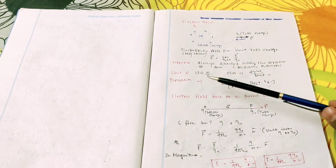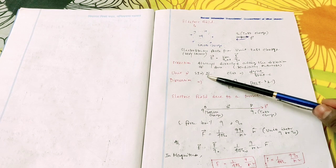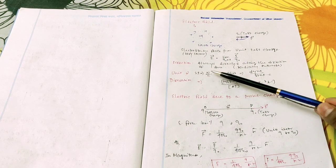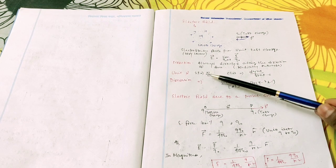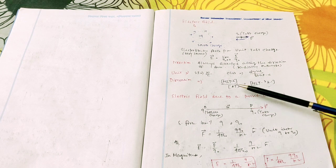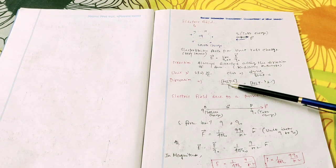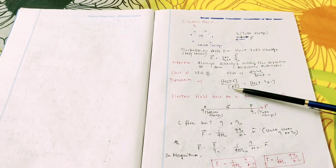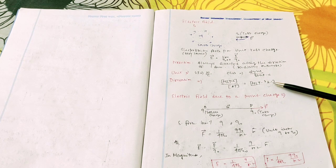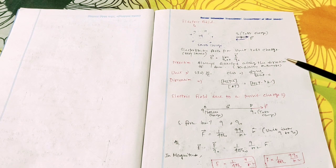The SI unit of electric field is newton per coulomb, since force is in newtons and charge is in coulombs. The CGS unit is dyne per statcoulomb. The dimensional formula is: force has dimension MLT minus 2 and charge has dimension AT, so the dimension of electric field is MLT to the power minus 3, A to the power minus 1.